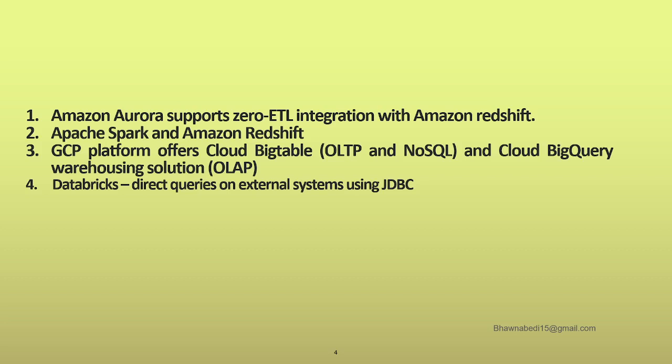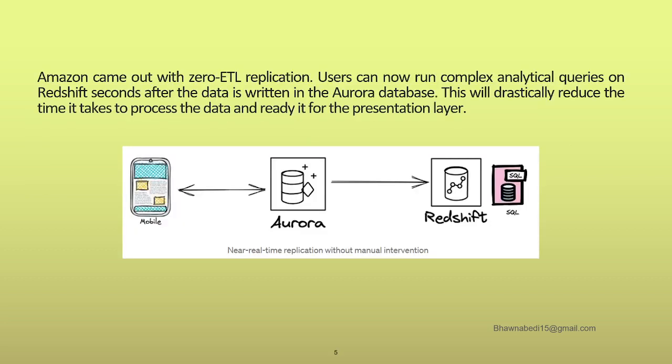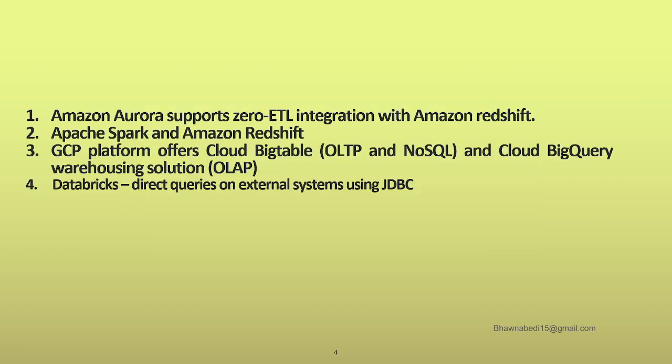With the Zero ETL integration approach, there is no data pipeline between Aurora and Redshift. As soon as the data arrives in Aurora, the Aurora-Redshift integration allows you to analyze the data using Redshift itself. This diagram I'm showing on screen is very helpful to understand what is exactly happening — it is Zero ETL replication. You can run complex analytical queries on Redshift as soon as the data is written to the transactional database, which will reduce your presentation layer time.